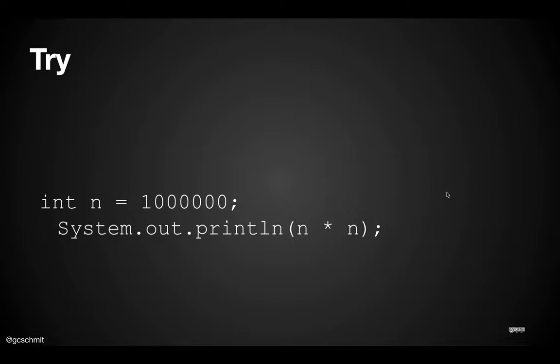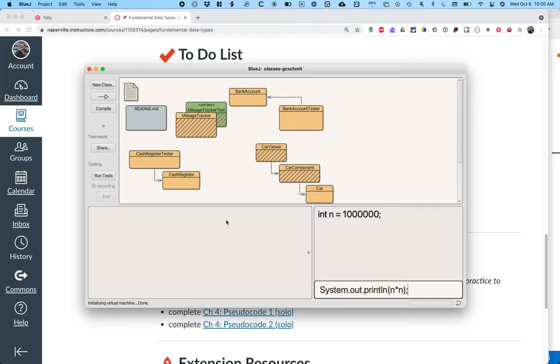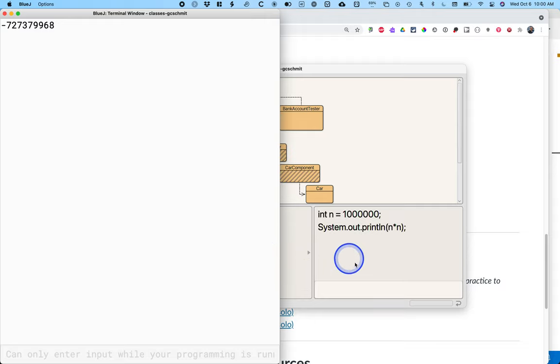Alright, here's what I want to try. So I'm going to freeze this on one screen. And then we're going to type this code together into BlueJ on the other screen. So we can type in this bottom part of this new code pad here, I can type int n equals 1 million. So 1, 1, 2, 3, 4, 5, 6, 6 zeros after the one. And then I can do system.out.println n times n. So I'm printing the product of a million times a million. And while I'm not exactly sure of the answer, what a million times a million is, I know it's not negative 727379968. That is not correct.